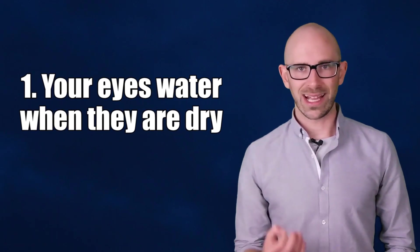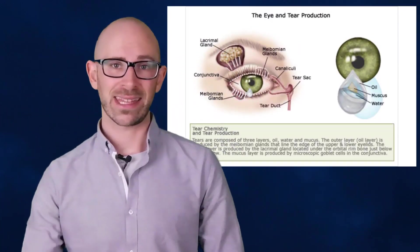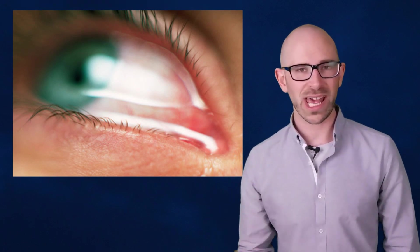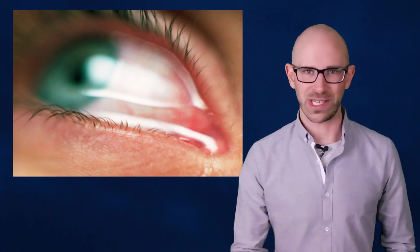Your eyes water when they are dry. I know this might sound crazy, but your tears are made up of three different components and they are water, mucus and fat. If these three components are not in exactly the right quantities, your eyes can become dry as a consequence. Your brain responds to this dryness by producing extra water, and hence your eyes water.